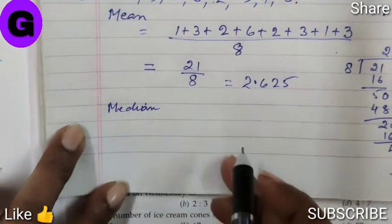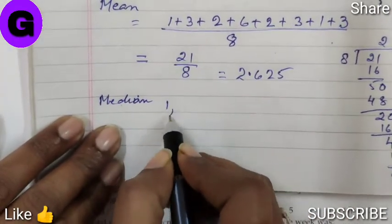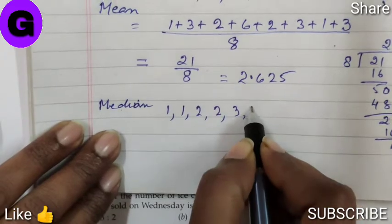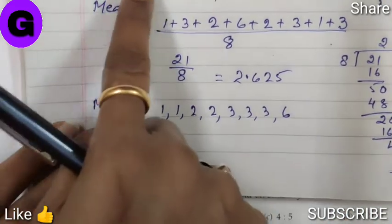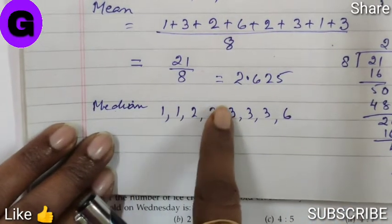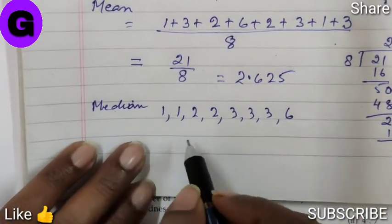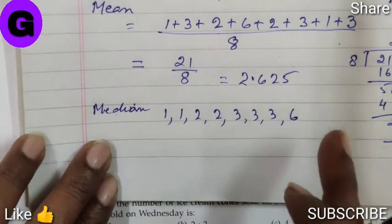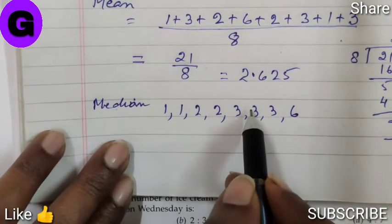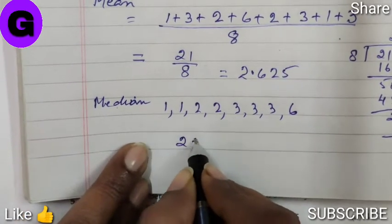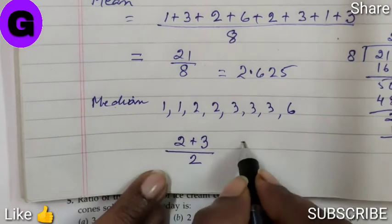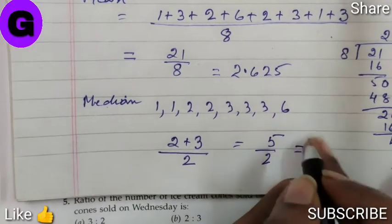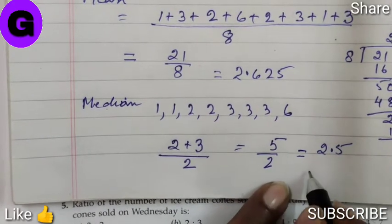Now for the median, arrange the digits in ascending order: 1, 1, 2, 2, 3, 3, 3, 6. Total number of observations = 8, which is even. We take the two middle terms: 2 and 3. Therefore: (2 + 3) / 2 = 5 / 2 = 2.5. So 2.5 is the median.